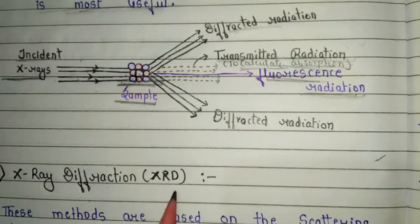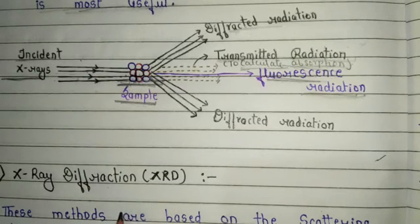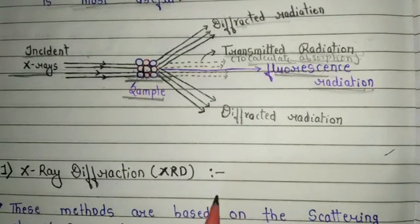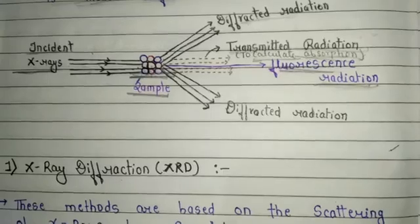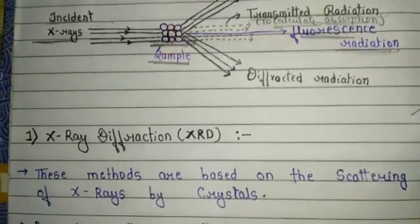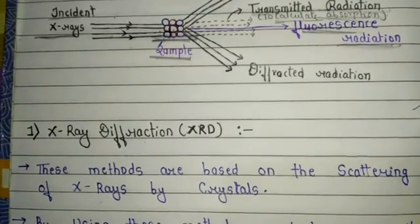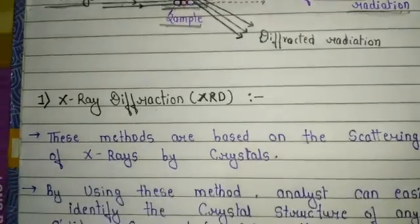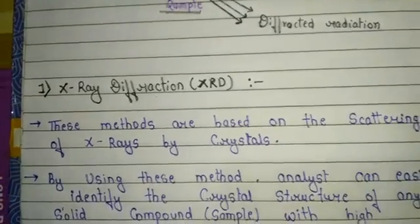Based on these three radiations, X-ray spectroscopy is categorized into three categories: first is X-ray diffraction, second is X-ray absorption, and third is X-ray emission.